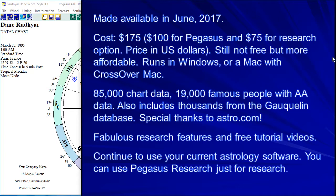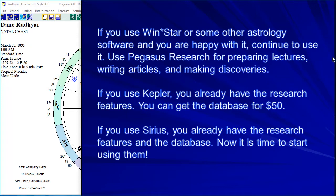You can continue to use whatever software you use — if you have the Winstar program, use it; if you use online astrology software, continue to use it. You can get Pegasus Research just to do your research, especially if you're a professional astrologer who gives lectures, writes articles, or wants to make discoveries. If you have Kepler, you can get the database for $50 since Kepler already has the research features. If you have Sirius, you already have all the data and research features.